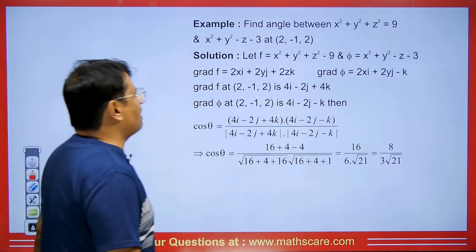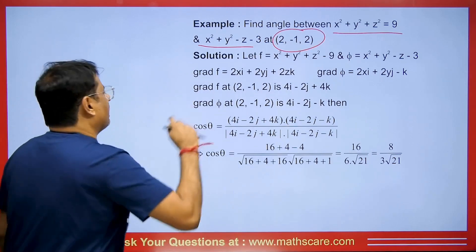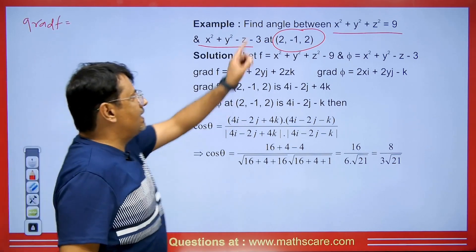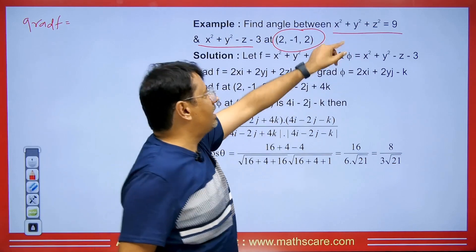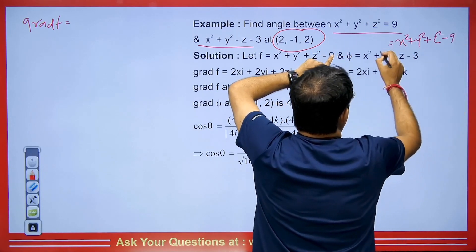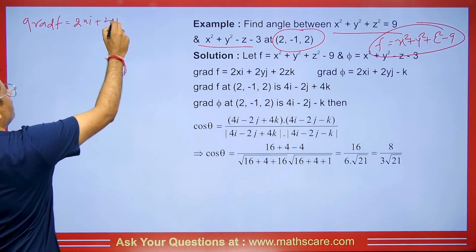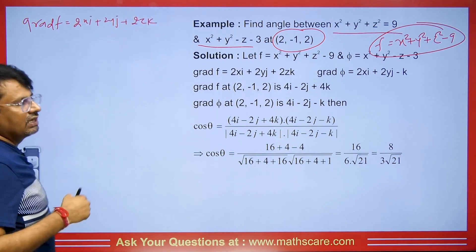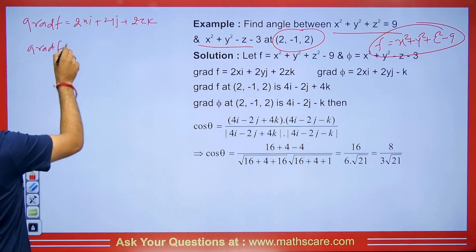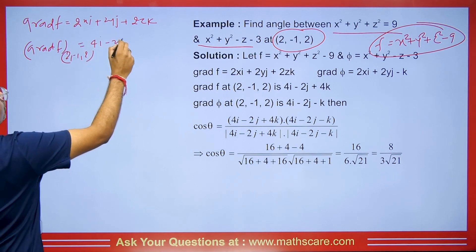Let's take an example to understand the concept. We have two surfaces given and at a point, we have to find the angle. We take the first surface as f and find the gradient of f. Taking the derivative with respect to x gives 2xi, with respect to y gives 2yj, and with respect to z gives the respective term. At the point (2, −1, 2), the gradient of f becomes 4i − 2j + 4k.